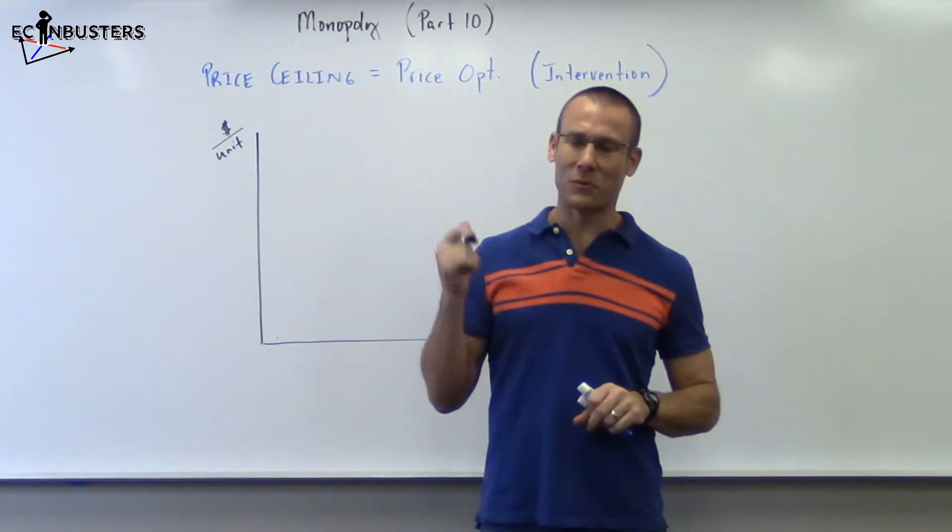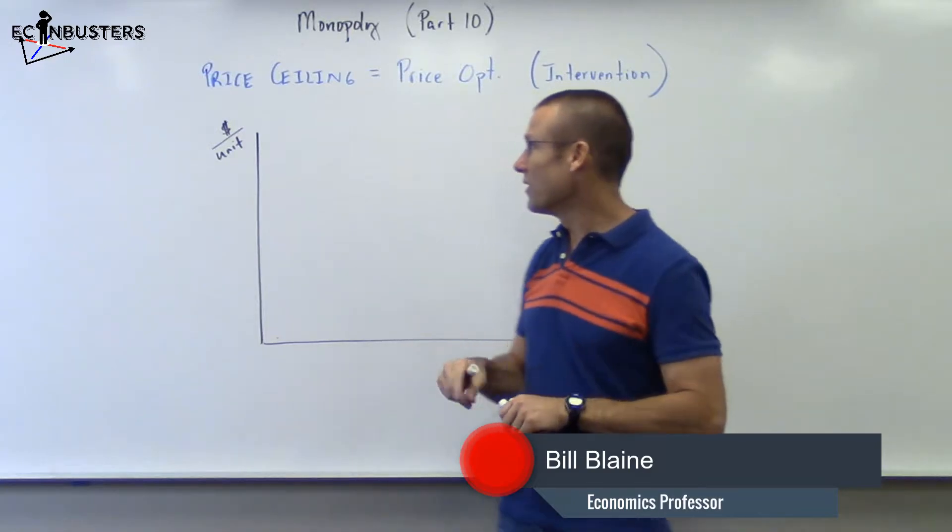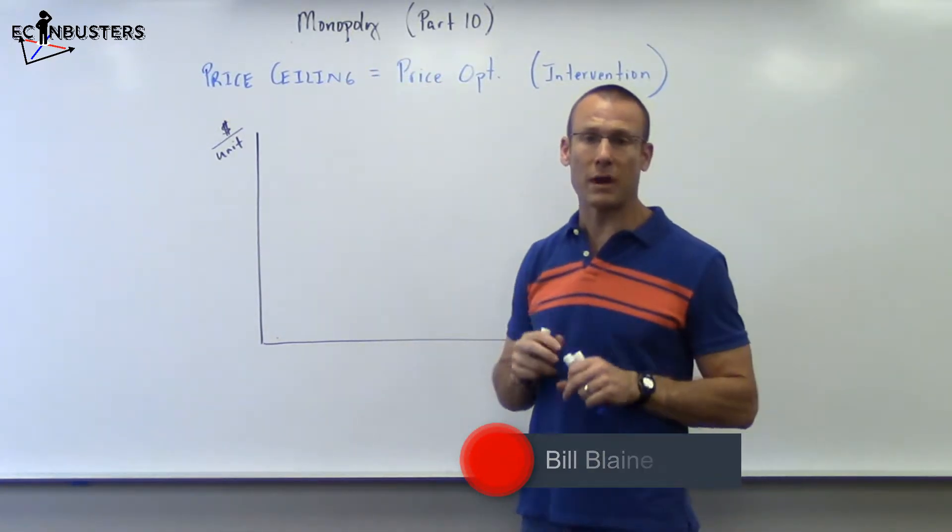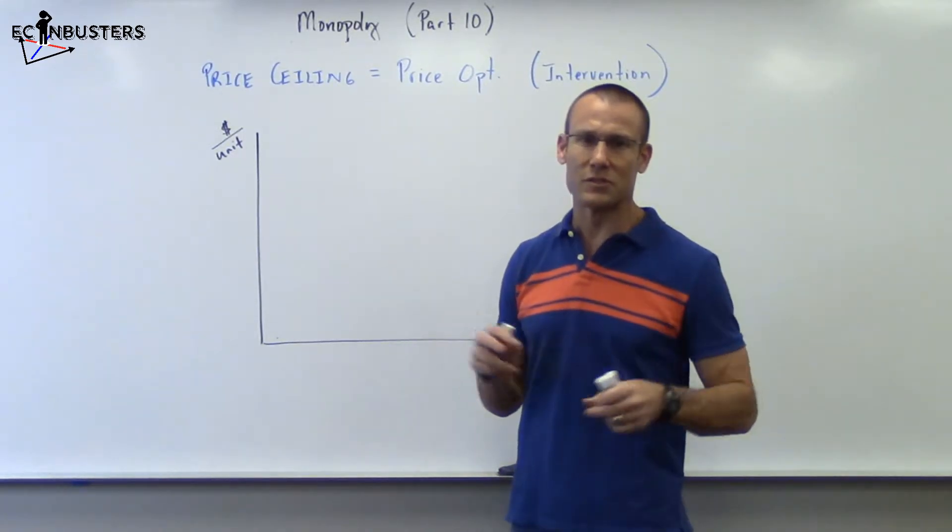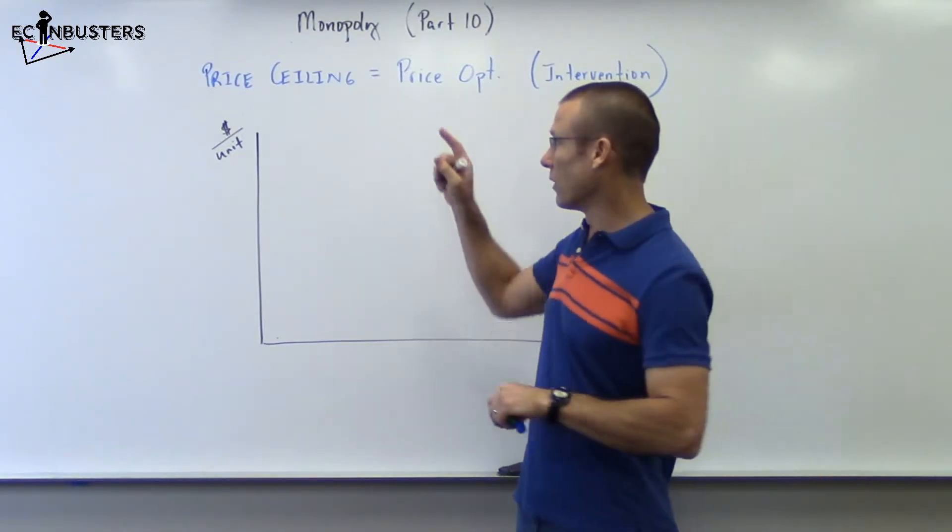Hey everybody, welcome back. We're still on monopoly, part 10 of monopoly theory of the firm. We got price ceiling equals price opt. Let me just say you've made it to part 10, you're awesome, you're in double digits now. We are really in the hard stuff here. We're going to do a price ceiling and it's going to be equal to price opt, but let me set this up first.